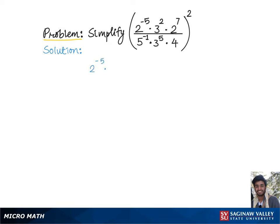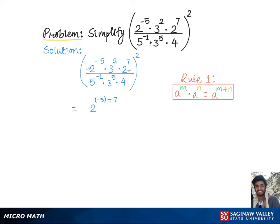To simplify (2^(-5) × 3^2 × 2^7) / (5^(-1) × 3^5 × 4) all squared: The exponents with common base 2 in the form of a product get combined according to Rule 1, giving 2 raised to negative 5 plus 7.